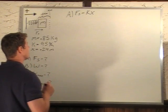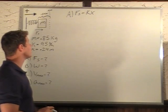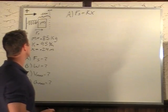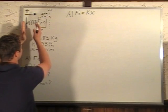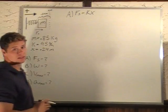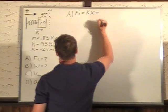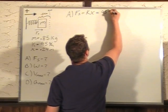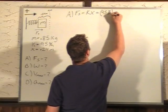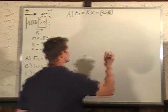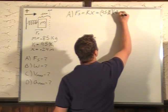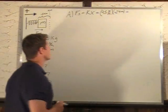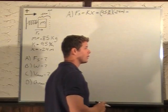K is our spring constant, x is our stretch in our spring, and we find out positive or negative just by looking at which direction it's going to be. We know positive is this way, we know that the spring is compressed this way, so that our force is going to be acting to the right. So we can plug in K of 95 newtons per meter times 0.24 meters.